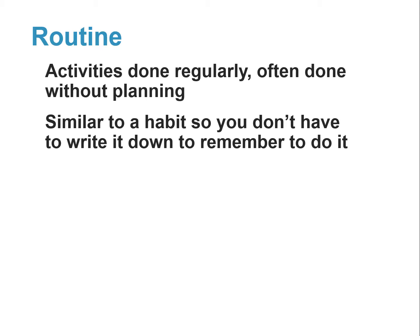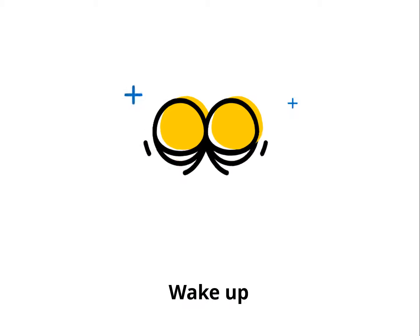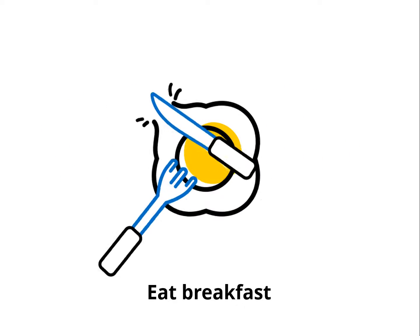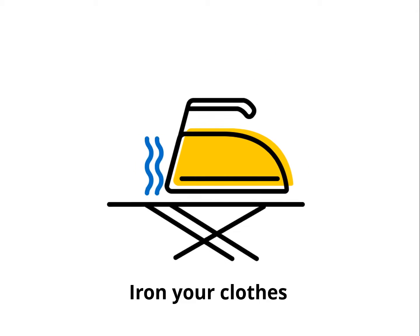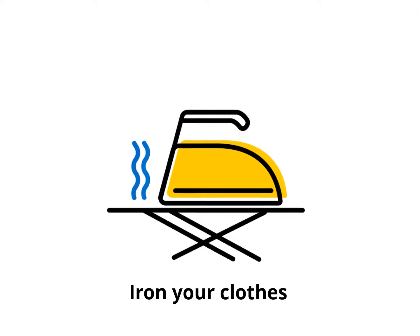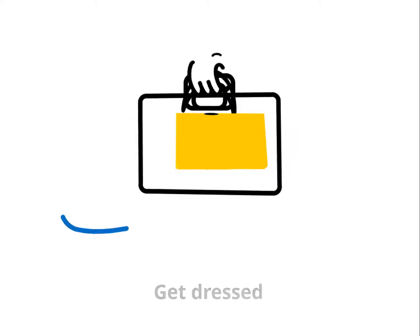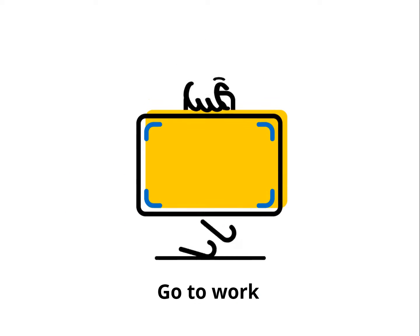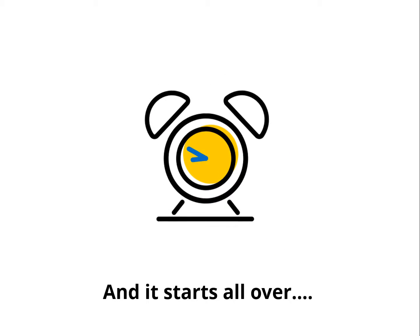Here's an example of a daily routine: wake up, eat breakfast, iron your clothes, get dressed, go to work. And it starts all over again.